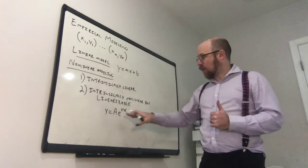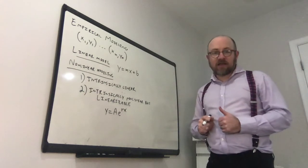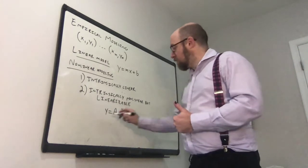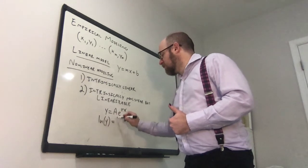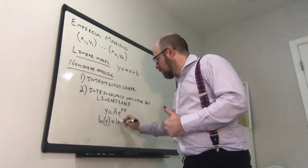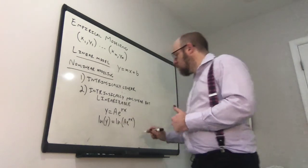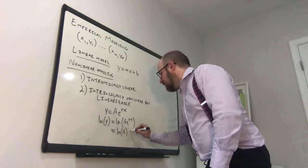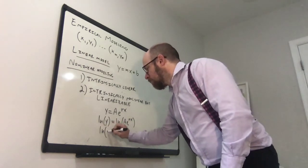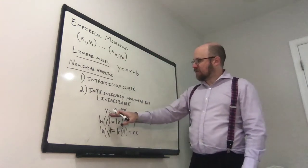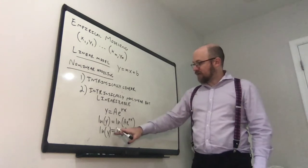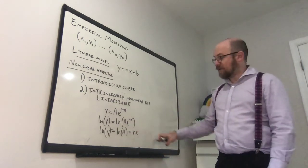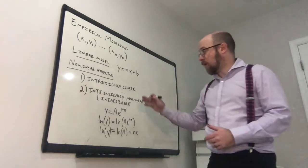y equals a times e to the rx is an inherently nonlinear function, right? This isn't linear in any way, but if we take the logarithm of it, so if you take the logarithm ln of y equals ln of ae to the rx, right? Remember your log rules lets you split this up into ln of a plus rx. So now we've taken something that wasn't linear and turned it into something linear. So you can see here we've got something equal to a constant plus a constant times some function of x, and so now this has become linearized. And so that's why we call it linearizable.